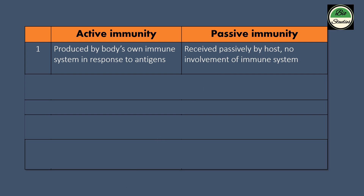In active immunity, the body itself produces the immune response against the antigen. In passive immunity, the antibodies are received from an external source and transferred into the host body.